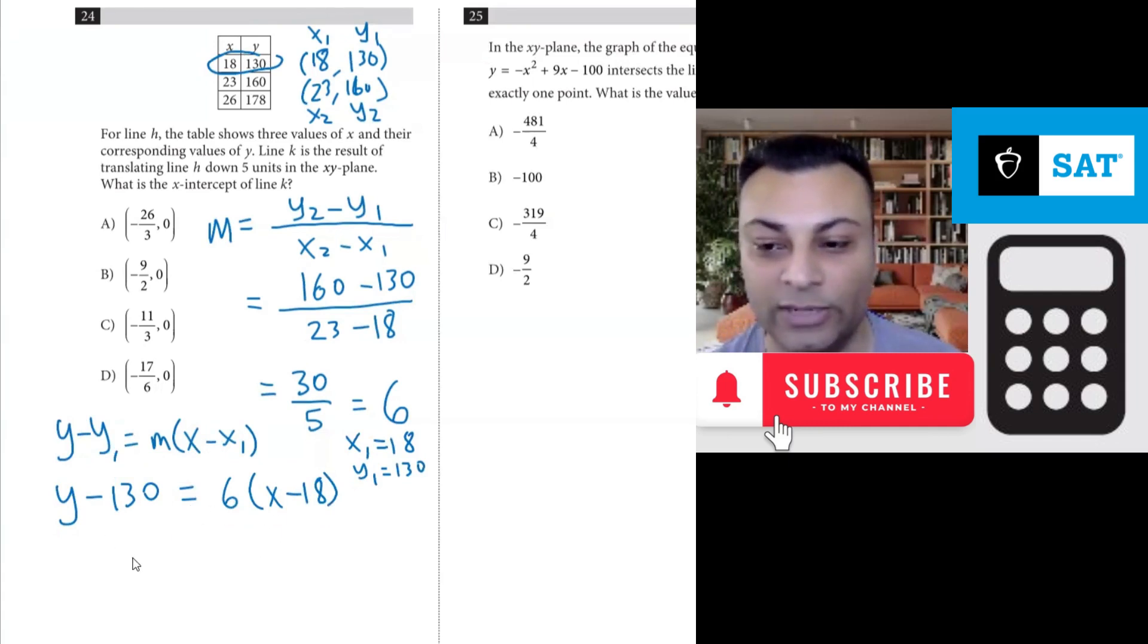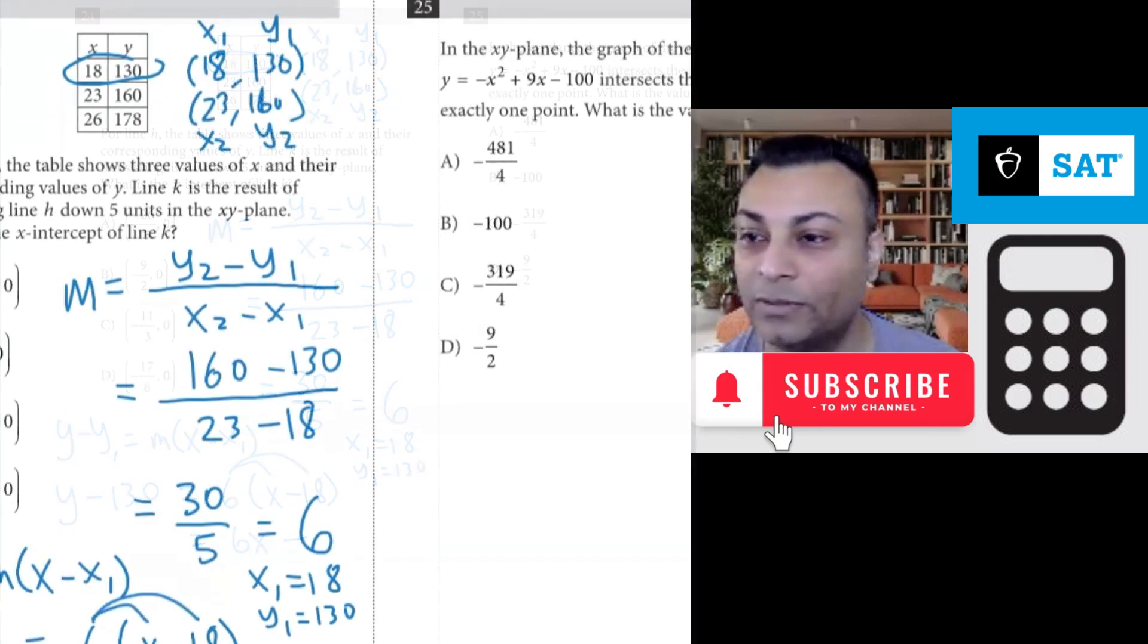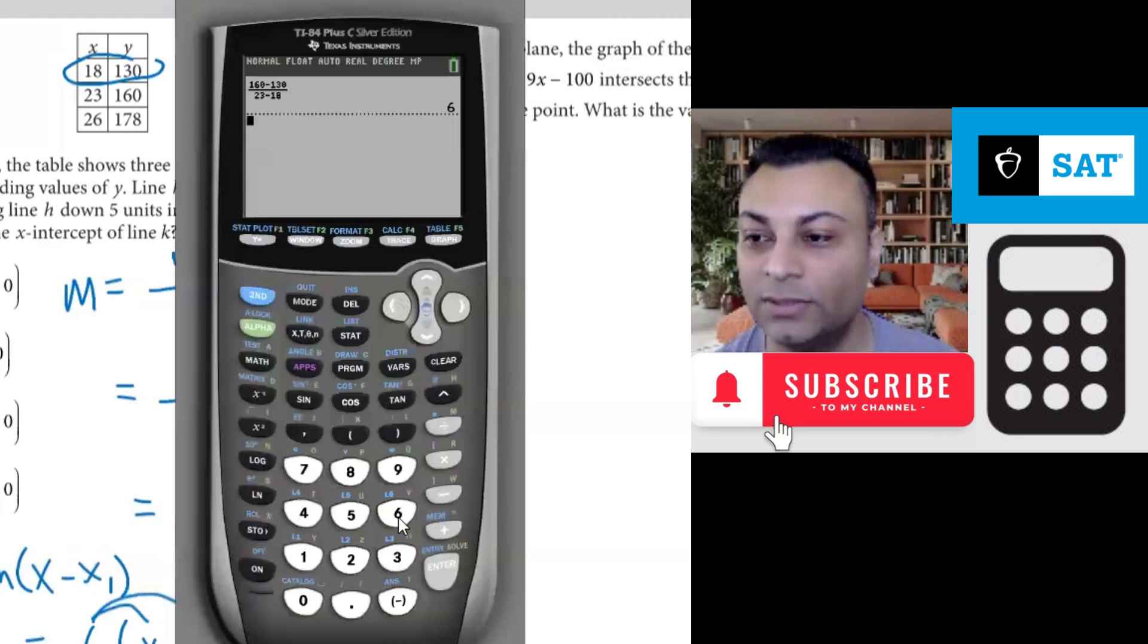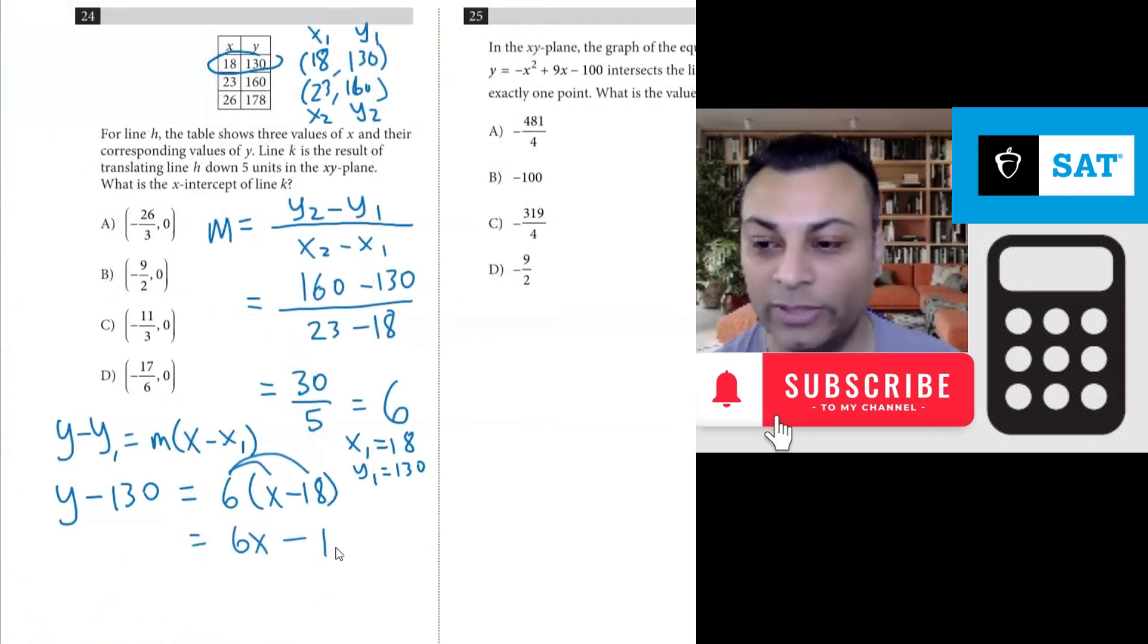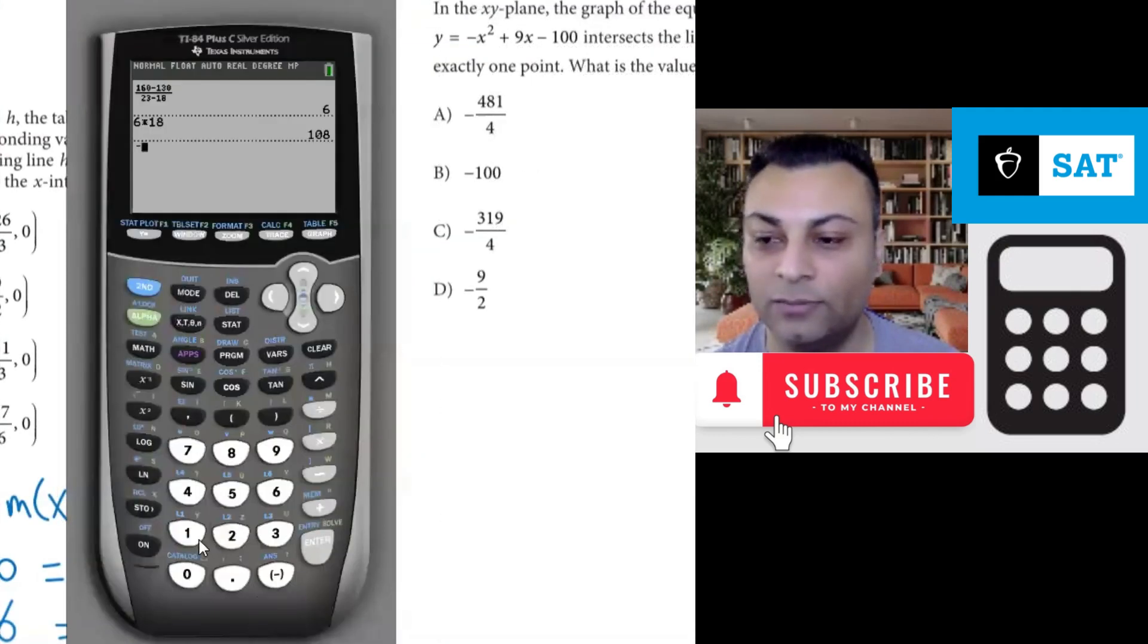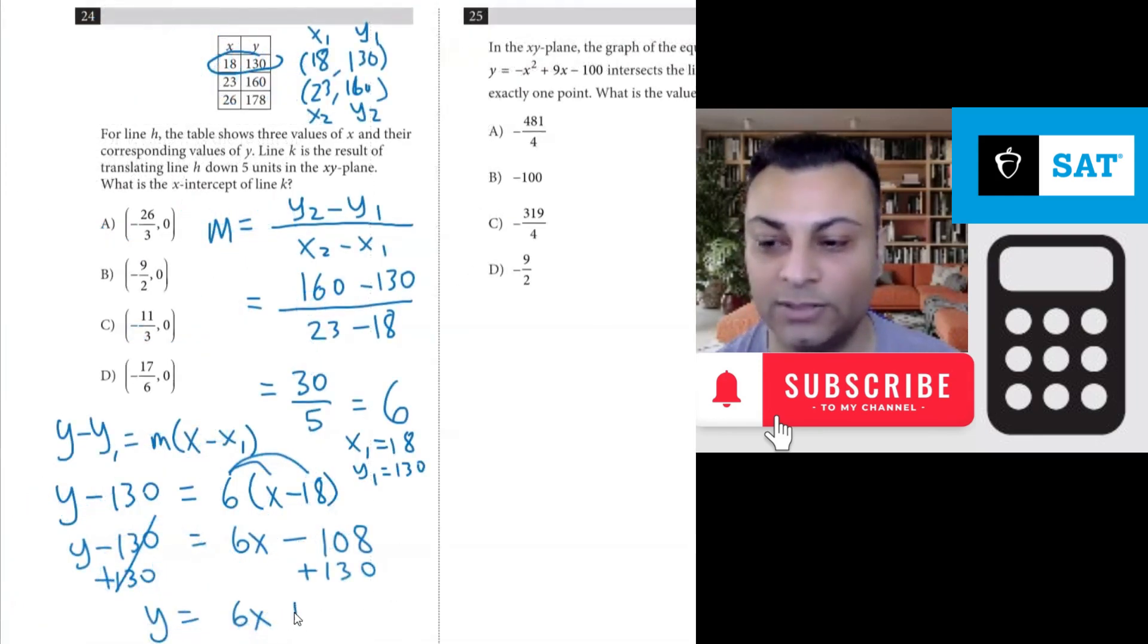And then we can keep going. You can distribute this. You can get 6X minus 6 times 18. Let's grab a calculator for that. 6 times 18, which is 108. So 108, this is Y minus 130. We're going to add 130 here and add 130 to this. So we have Y equals 6X. Now 130 minus 108 or negative 108 plus 130, it's 22. So let's go ahead and write this as 6X plus 22.